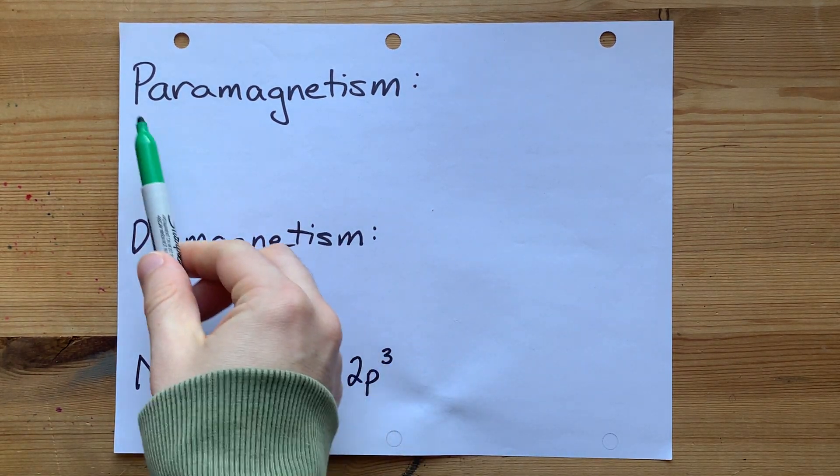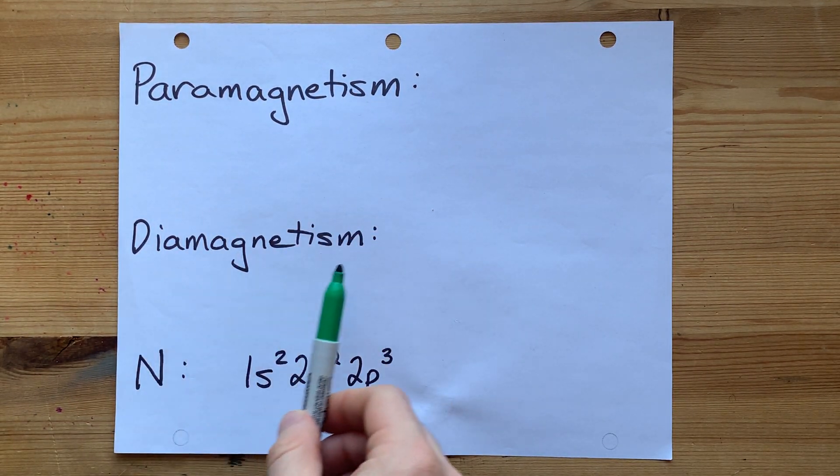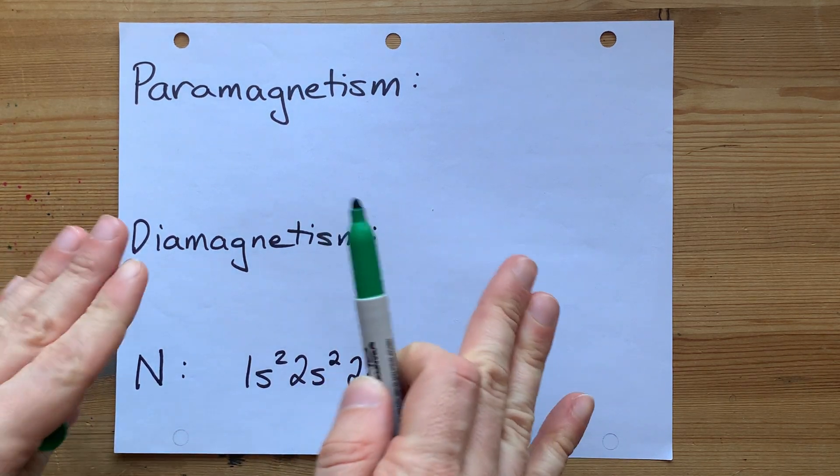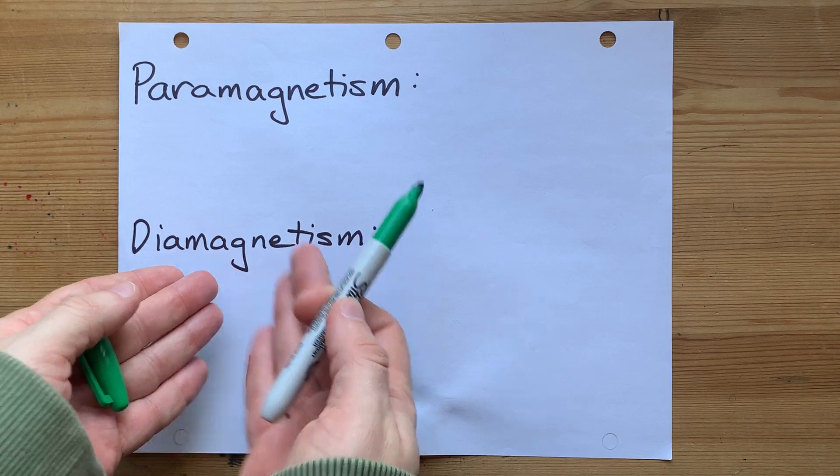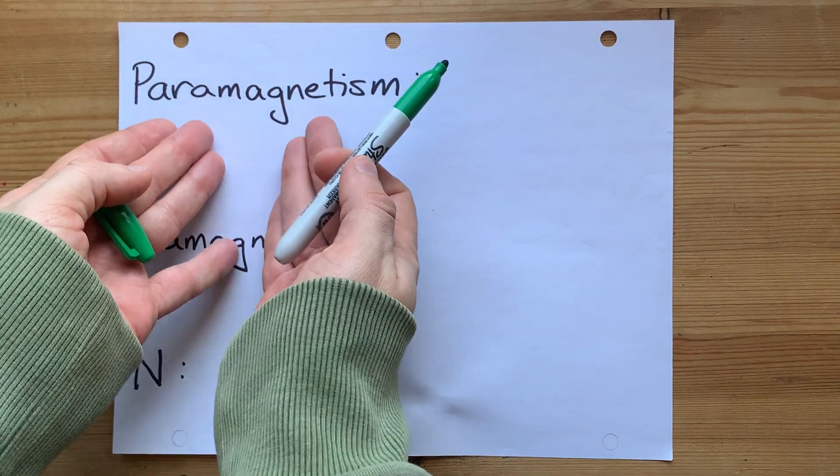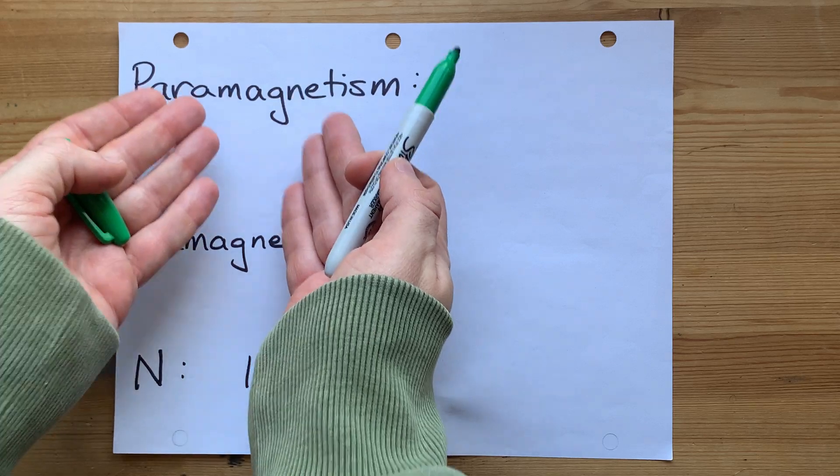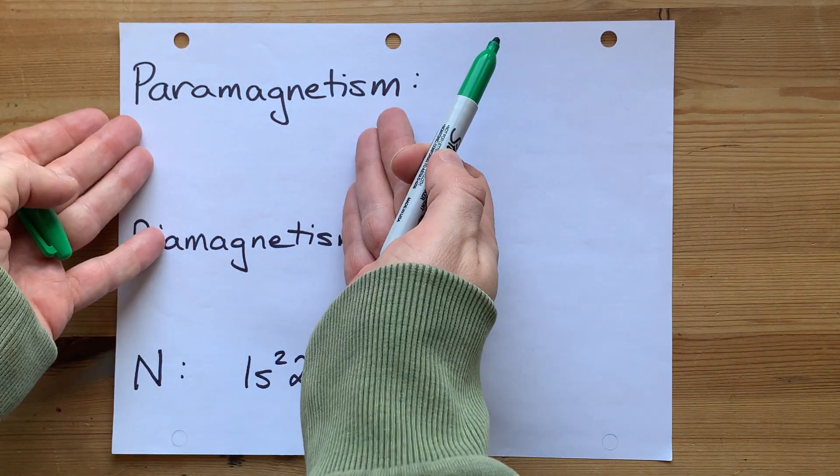Kids will often ask if a substance is paramagnetic or diamagnetic. Officially, all molecules have some diamagnetism, but if there is paramagnetism as well, then it's going to dominate, and so we just say it's paramagnetic.